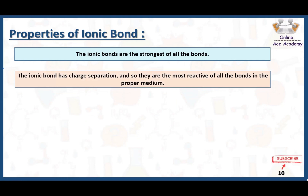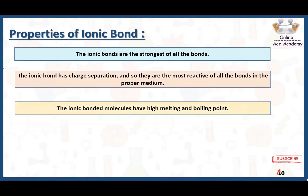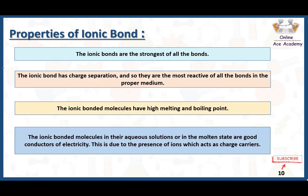Ionic bond molecules have high melting and boiling points because the bond is very strong, requiring more energy to break it. The ionic bonded compounds in aqueous solution or in their molten states are good conductors of electricity. This is due to the presence of ions which act as charge carriers.